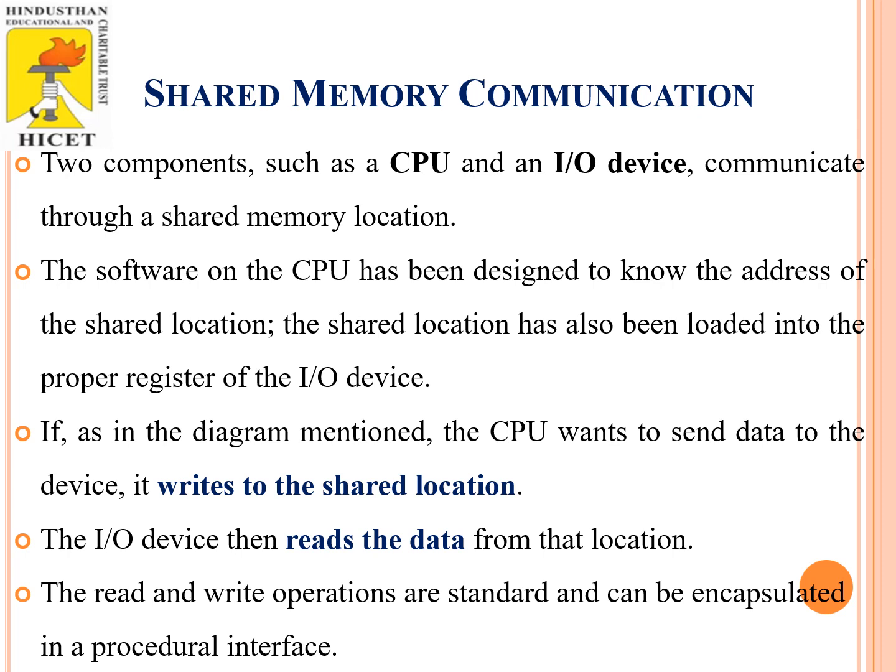First, we are going to discuss about shared memory communication. Two components are used in order to share the communication: one is the CPU and another one is the input-output devices. The software on the CPU is designed to know the address of the shared location, and the shared location has also been loaded into the proper register of the input-output device. The CPU wants to send the data to the device, so it writes to the shared location, and then the input-output device reads the data from that particular location. The read and write operations are standard and can be encapsulated in proper procedural interfaces.